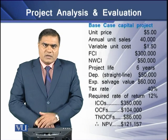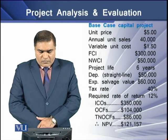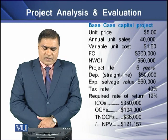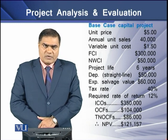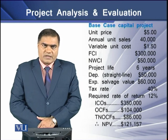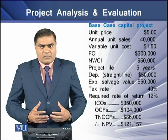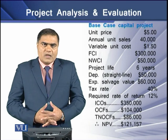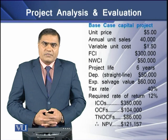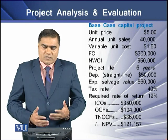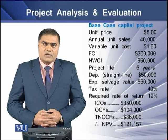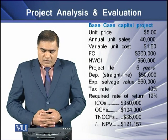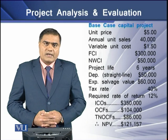For that purpose, we have a certain example with variables including unit price, annual unit sales, variable unit cost, fixed capital investment, net working capital investment, project life, depreciation on a straight-line basis, expected salvage value, tax rate, and required rate of return. Using these variables, we have initial cash outflows of $350,000, operating cash flows of $104,000, and terminal non-operating cash flows of $86,000, yielding a project NPV of $1,157.